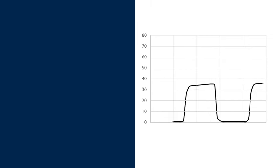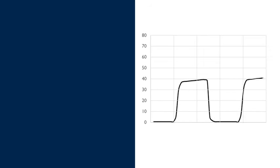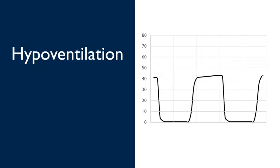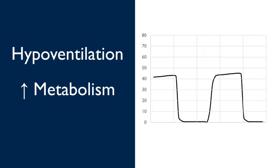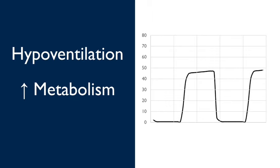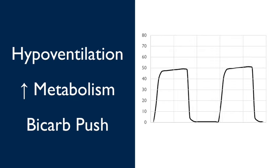Our next example is basically the complete opposite. You'll notice a gradually increasing end-tidal CO2. So, this can be caused by anything that increases the arterial CO2, such as hypoventilation, or an increase in metabolism, such as hyperthermia. You'll also notice that the end-tidal will go up any time that you give your patient exogenous bicarbonate, such as a bicarb push.